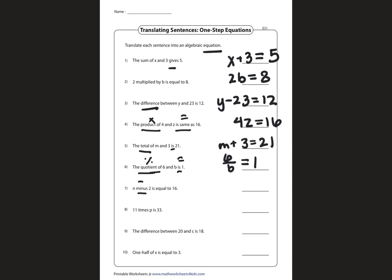N minus 2, subtraction, is equal to 16. The equal sign indicates equals to 16. So n minus 2 is equal to 16.